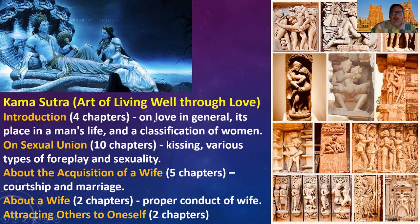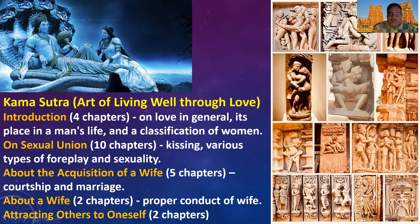If you look at the chapters of the Kama Sutra: the first four chapters are on love in general, its place in a man's life, and the classification of women. On sexual union there are ten chapters on kissing, various types of foreplay, and sexuality — which is only one chapter. About the acquisition of a wife, courtship and marriage — five more chapters. About a wife — two chapters. And attracting others to oneself — two chapters. The vast majority is much more than just the sexual aspect. It literally is much more about the practice of marriage and living well, specifically devoted to wife and husbandry.